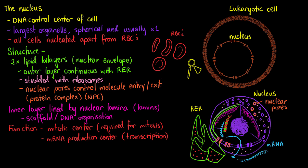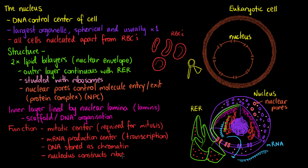So far we have that the nucleus is the mitotic centre of the cell, and also where we produce mRNA through transcription. It is also the DNA control centre — where we store DNA, which makes up our chromosomes. Last but certainly not least, we house a structure within our nucleus called the nucleolus, which is responsible for ribosome construction. We'll do a whole video on the nucleolus as well.